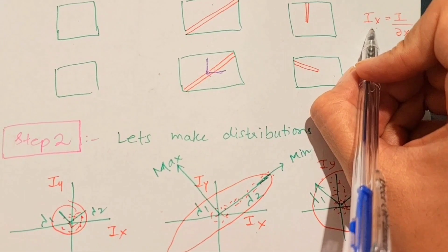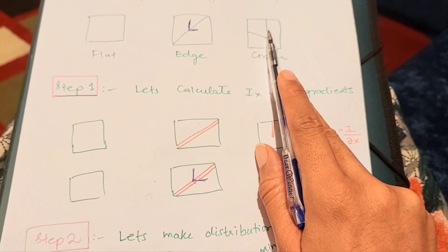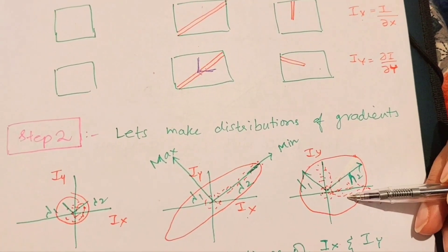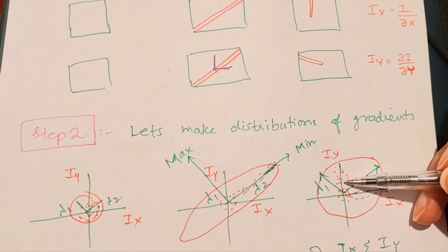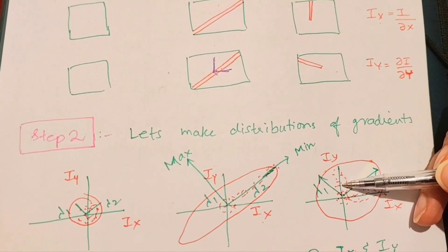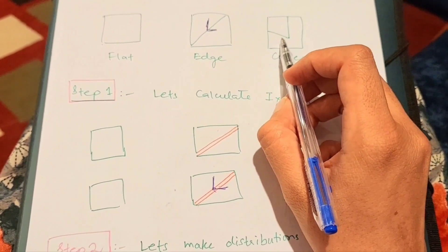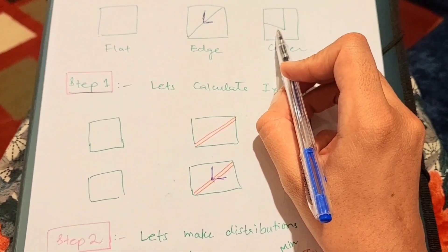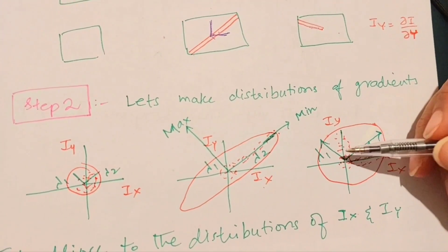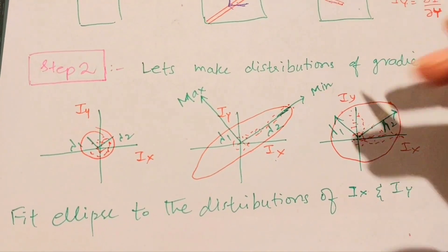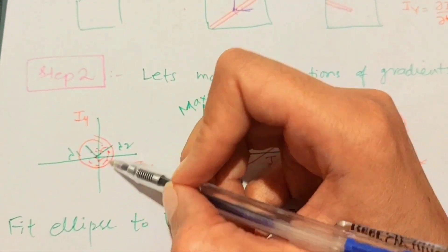For the corner, considering the gradient Ix — these points have very strong Ix gradient but minimal Iy gradient. This represents a vertical line, for which Iy is almost zero. Similarly, other points have Ix almost zero, representing a roughly horizontal line. So for a corner, we get points spread in both axes. In this same step, we fit ellipses to these distributions, with axes labeled lambda 1 and lambda 2.